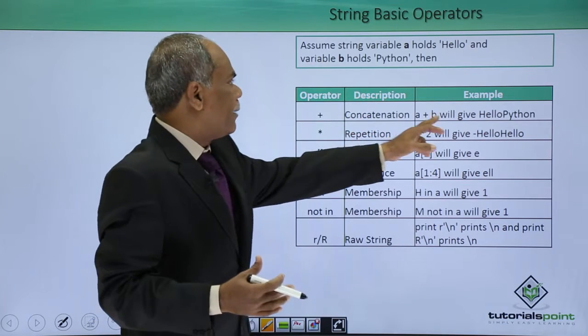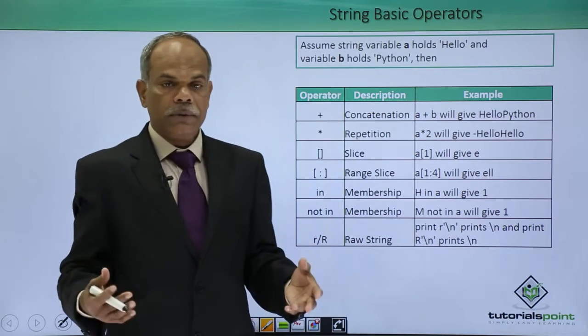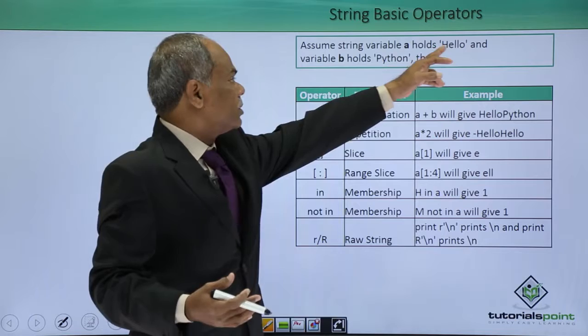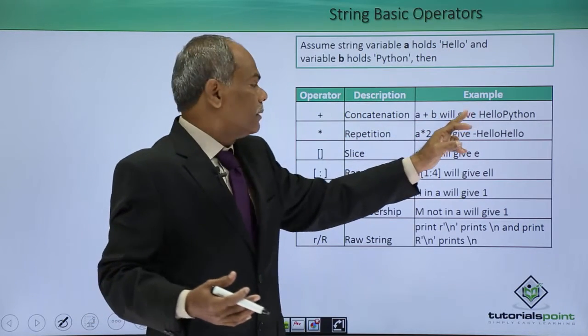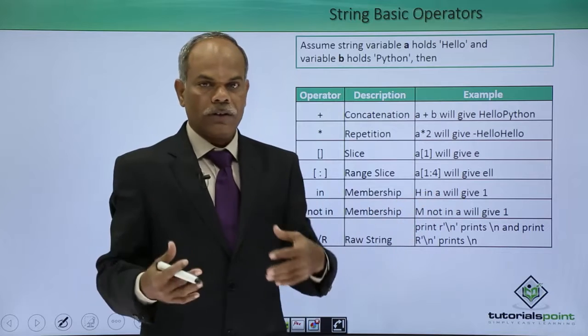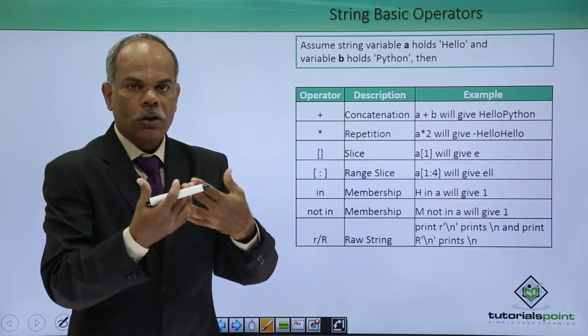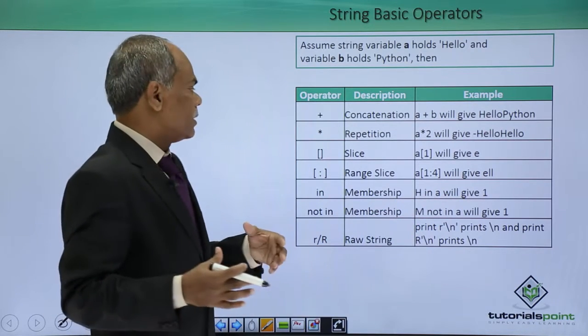For example, a and b are two string variables. a holds hello and b holds python. Then a plus b will result into hello python. These two strings will be concatenated or connected to each other.